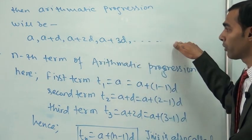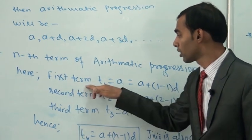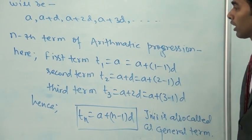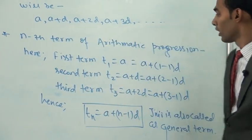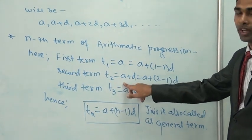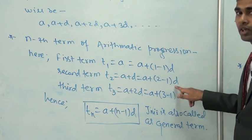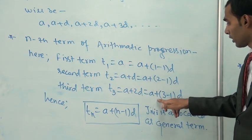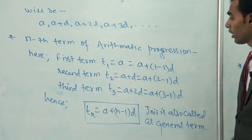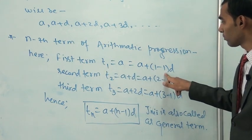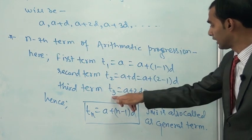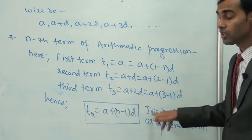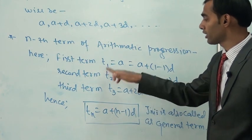To find the nth term of arithmetic progression: the first term t1 = a = a + (1-1)d. The second term t2 = a + d = a + (2-1)d. The third term t3 = a + 2d = a + (3-1)d. Observing the pattern, when t1 then (1-1), t2 then (2-1), t3 then (3-1). Hence tn = a + (n-1)d. This is the required expression for the nth term of arithmetic progression.